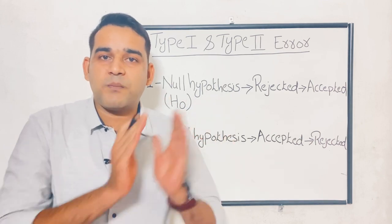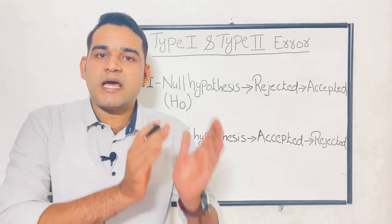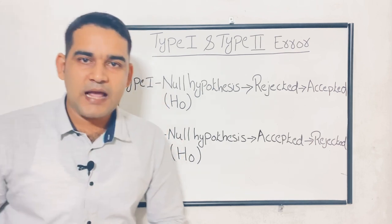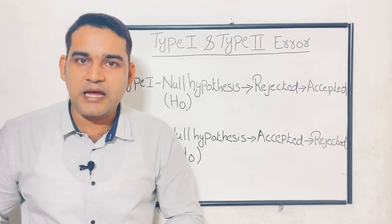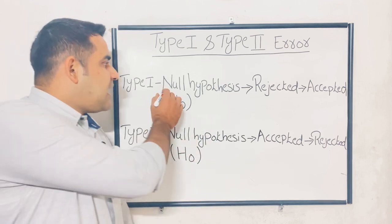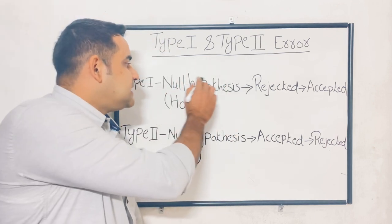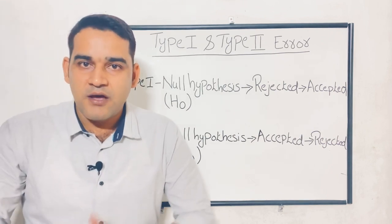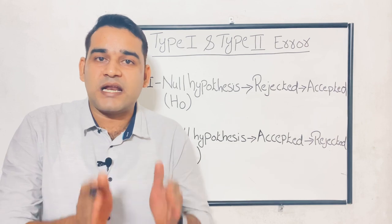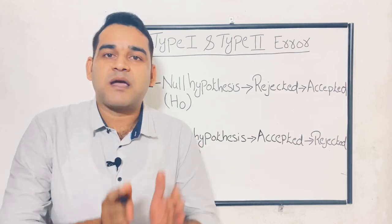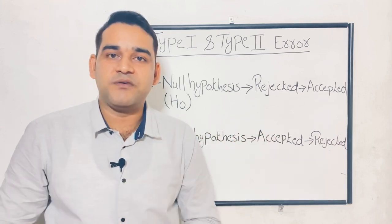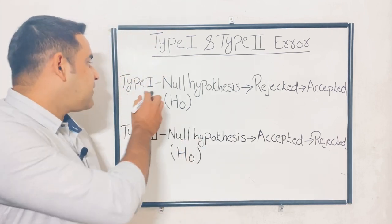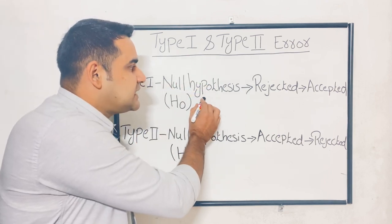Now we can move to our topic — type 1 error and type 2 error. So what is type 1 error? If you are a researcher and a null hypothesis is there, you have to accept that null hypothesis. With our example: there is no relationship between eating ice cream and back pain. We know there is no relationship at all. Type 1 error will occur when the null hypothesis is rejected.